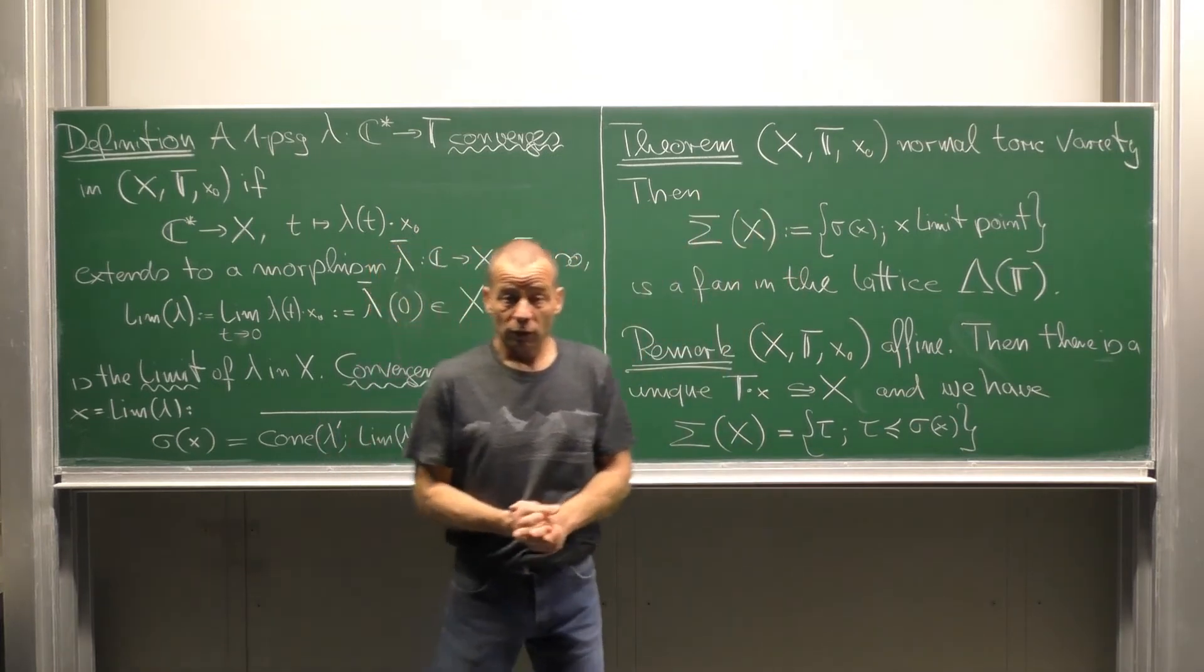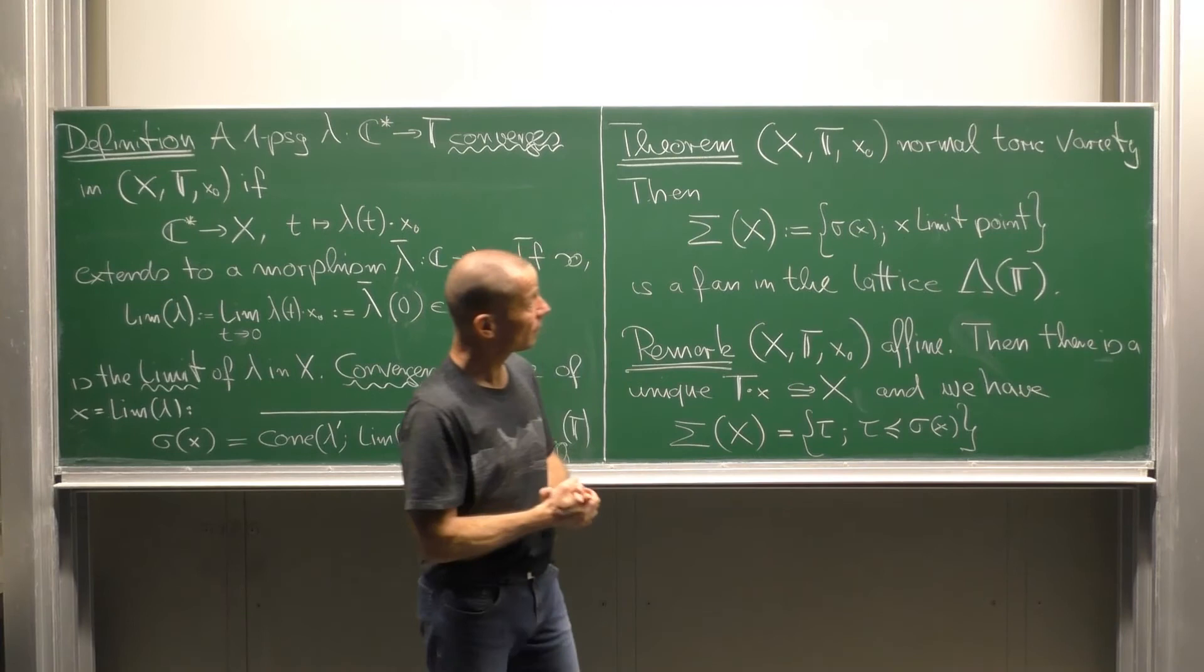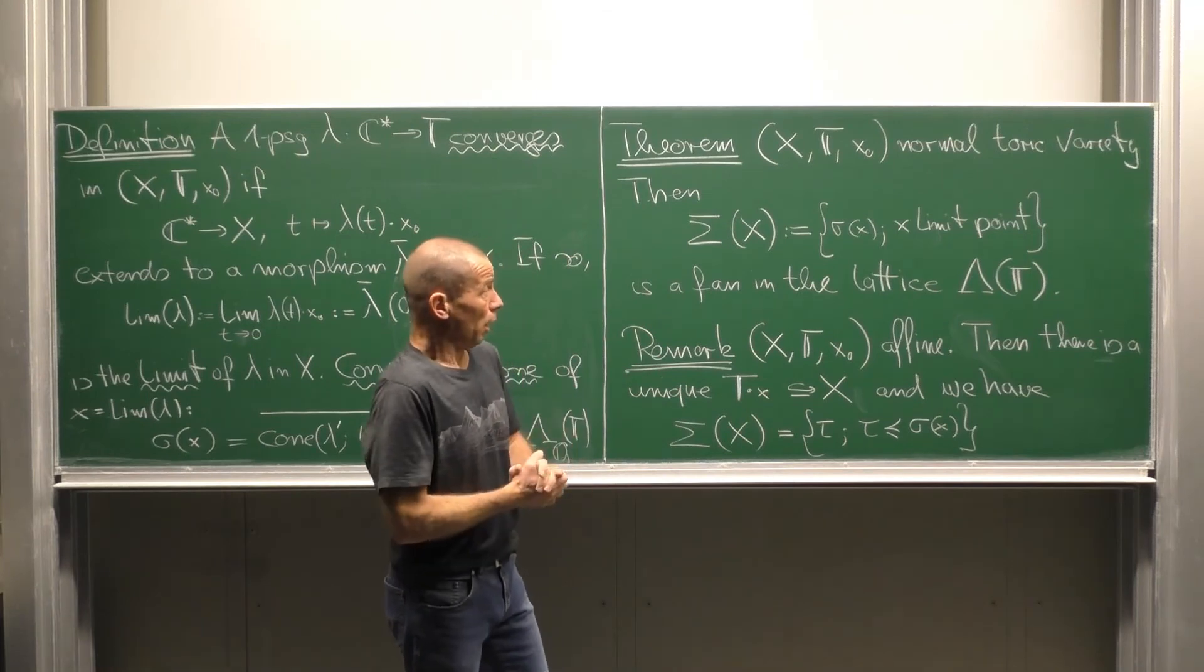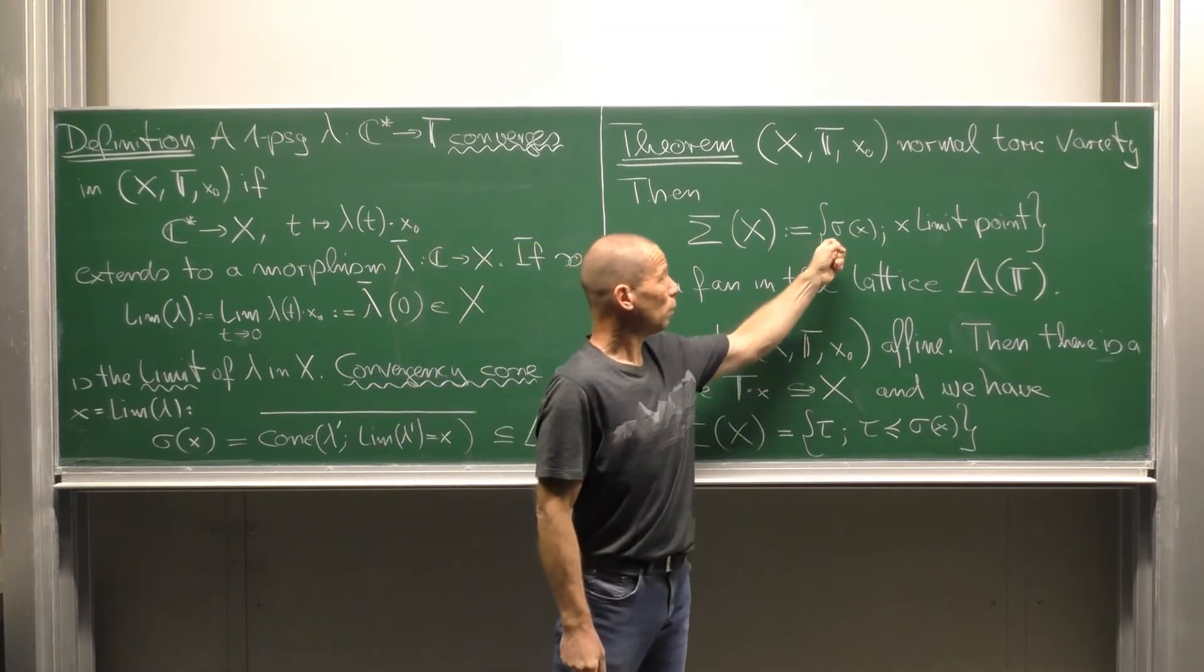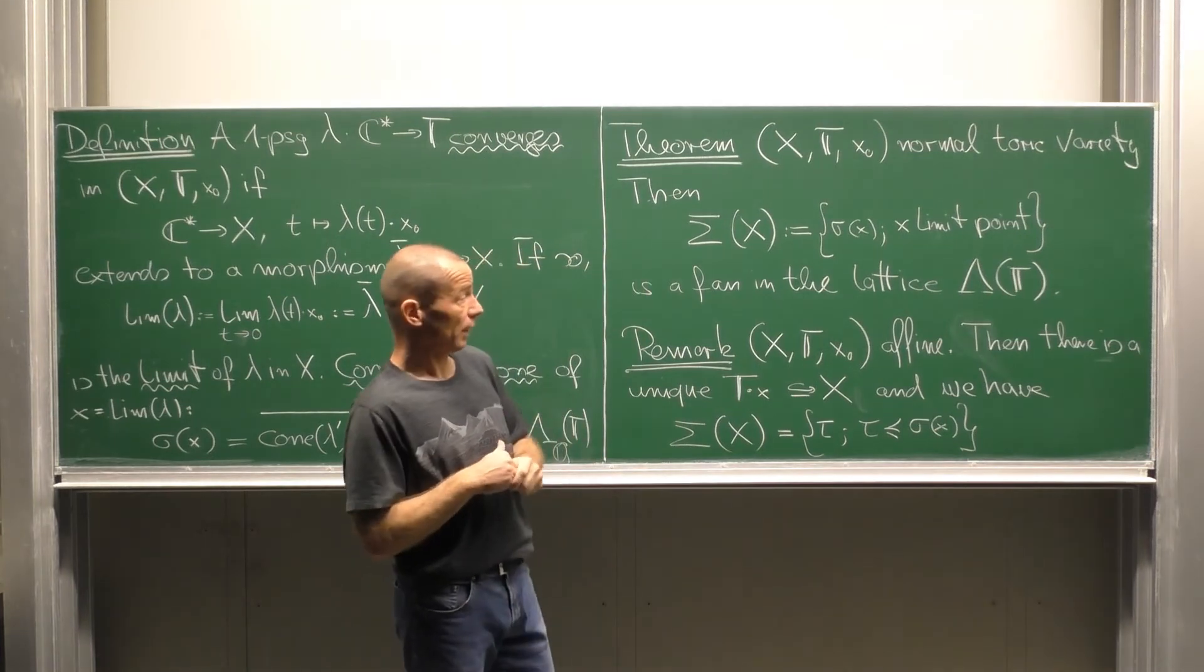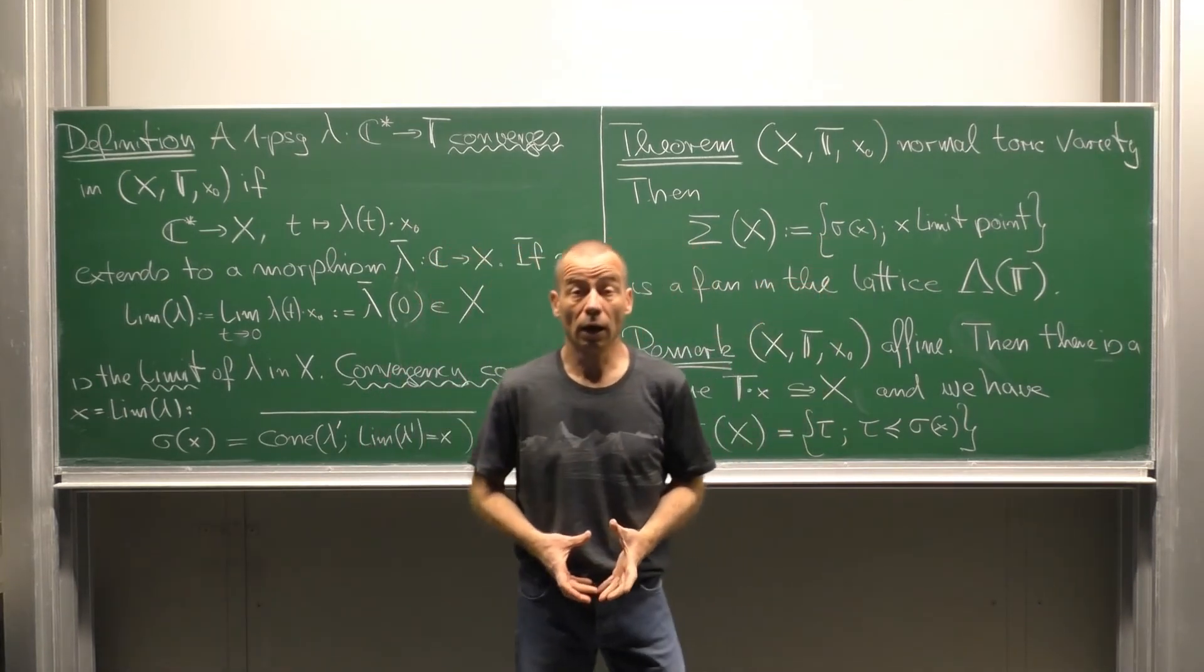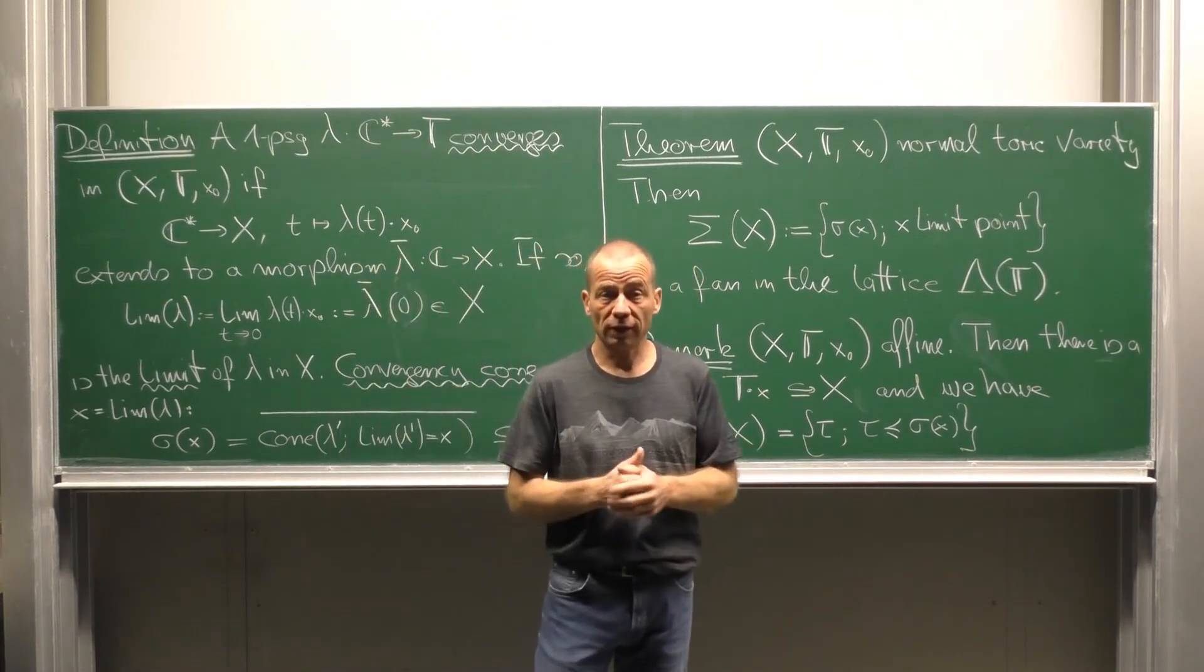We come to the theorem about torus varieties and lattice fans. Consider a normal torus variety xt, x0. Normal just means that our variety x has at most normal singularities. Then the set capital sigma of x consisting of all convergency cones of the limit points we can find in x, this set is a fan in the lattice of one parameter subgroups. So this means in particular that these convergency cones are convex polyhedral cones in our sense. And they fit together as they should do in a fan.